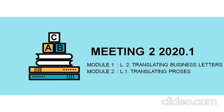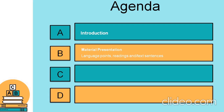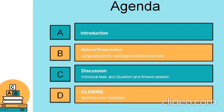Today we have two kinds of discussion. First, we will have a model one for learning activity: translating business letters. If we have enough time, we will move to model two — the translation process. We also have material presentation, focusing on language points you need to consider, followed by individual tasks and a question-and-answer session.